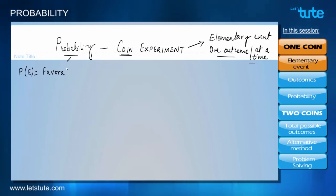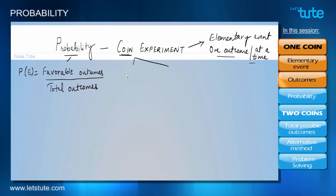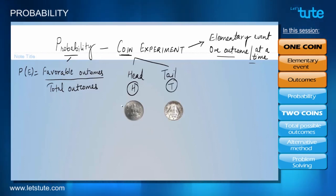We are going to use the basic formula for probability, which involves the ratio between the number of favorable outcomes to the total possible outcomes. A coin has two sides — heads, denoted as H, and tails, denoted as T.